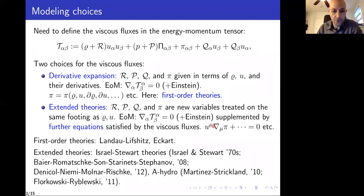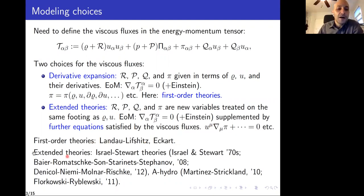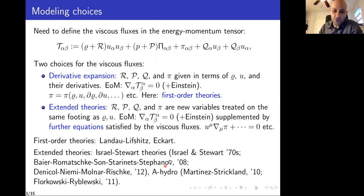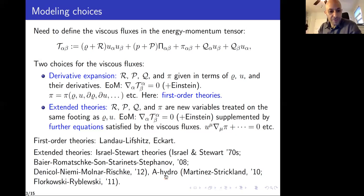Examples of first-order theories would be the Landau-Lifshitz and the Eckert theories. Examples of extended theories would be the Israel-Stewart theories — I put that in plural because Israel-Stewart can refer to different theories, and I'll collectively call all of them Israel-Stewart theories. Another example of extended theories would be anisotropic hydrodynamics.